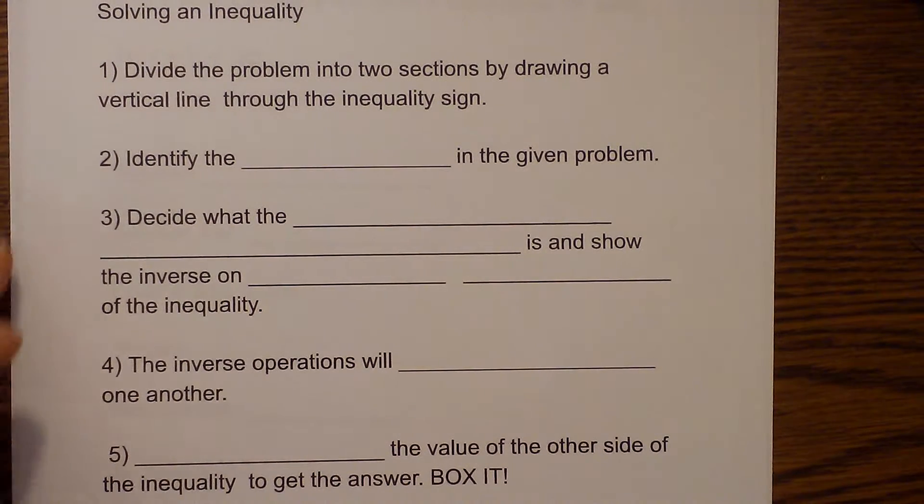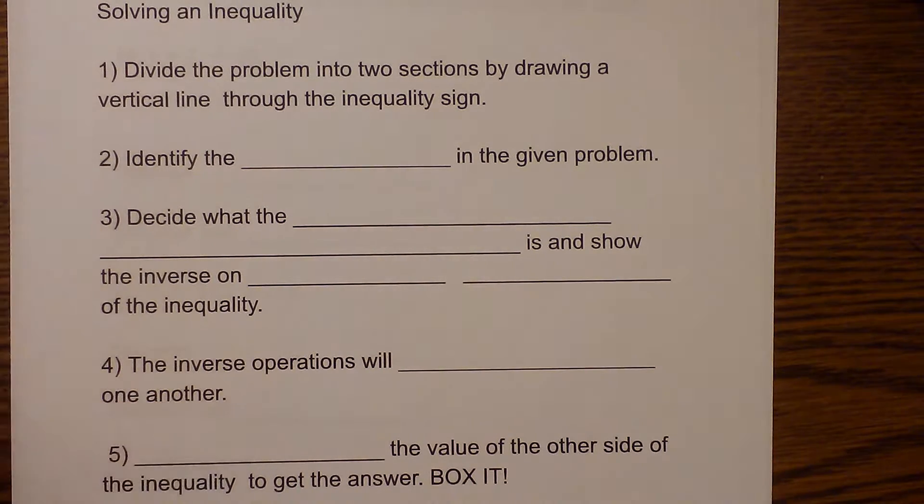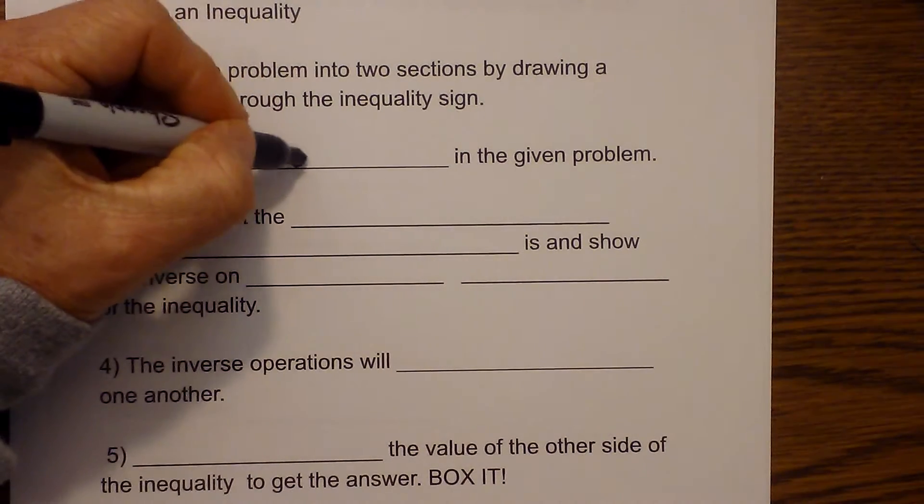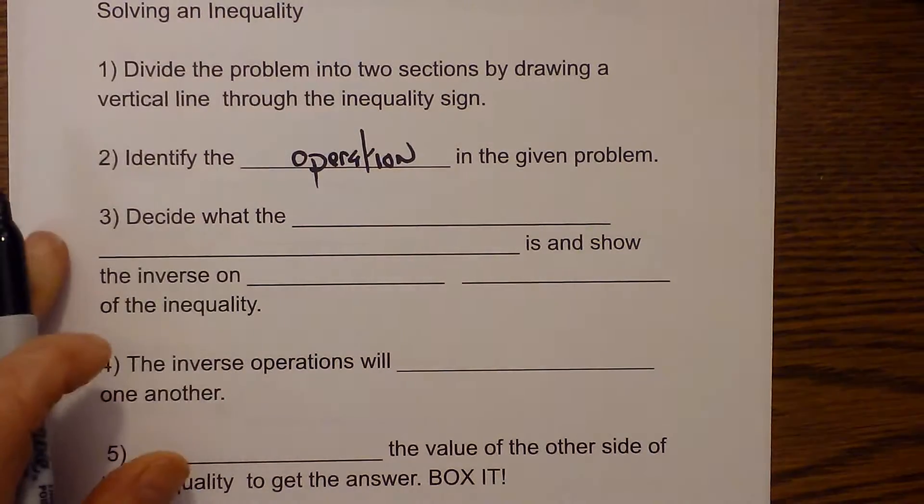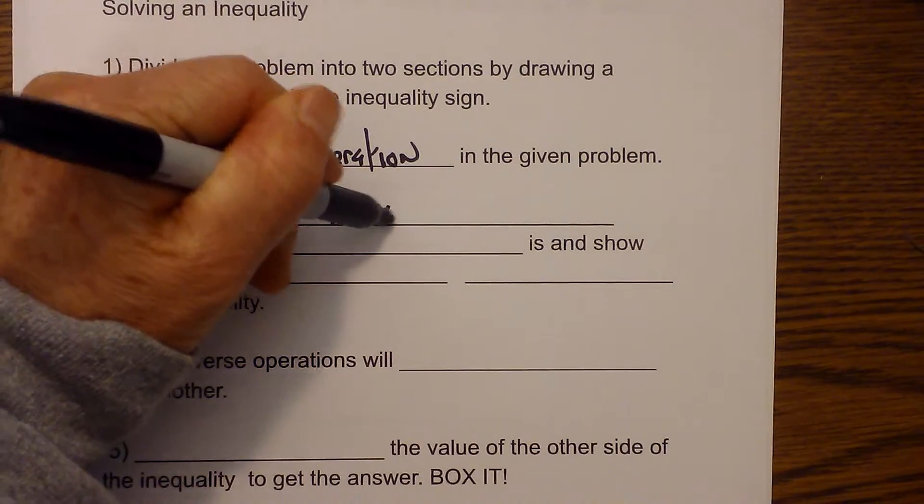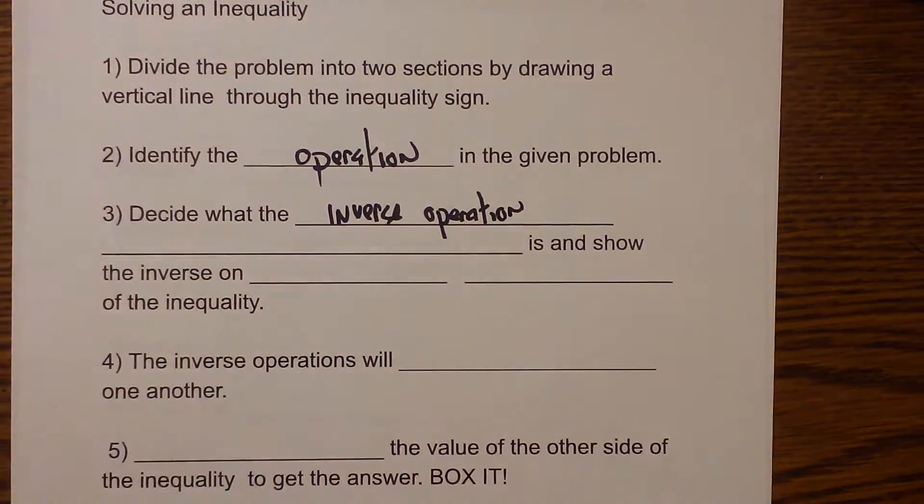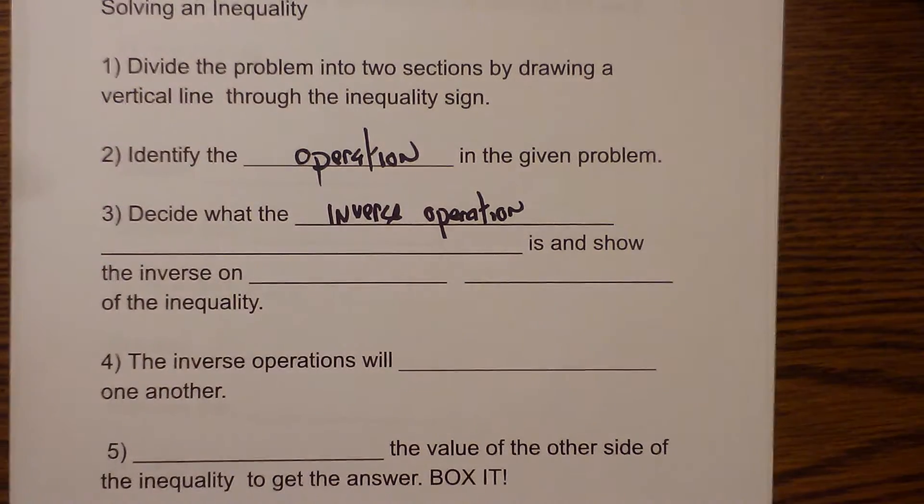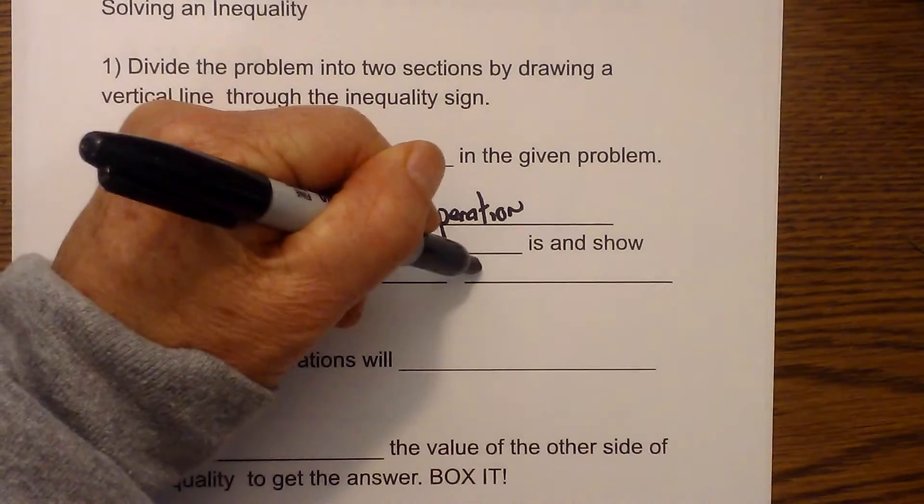First, it may help if you divide the problem into two sections by drawing a vertical line through the inequality sign. Next, you will identify the operation in the given problem. Decide what the inverse operation is and show the inverse on both sides.